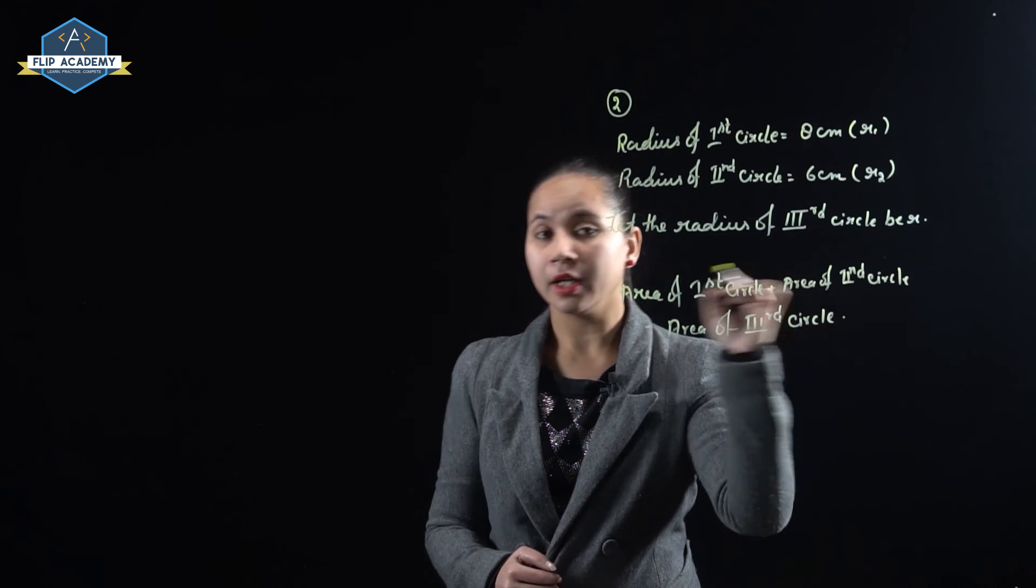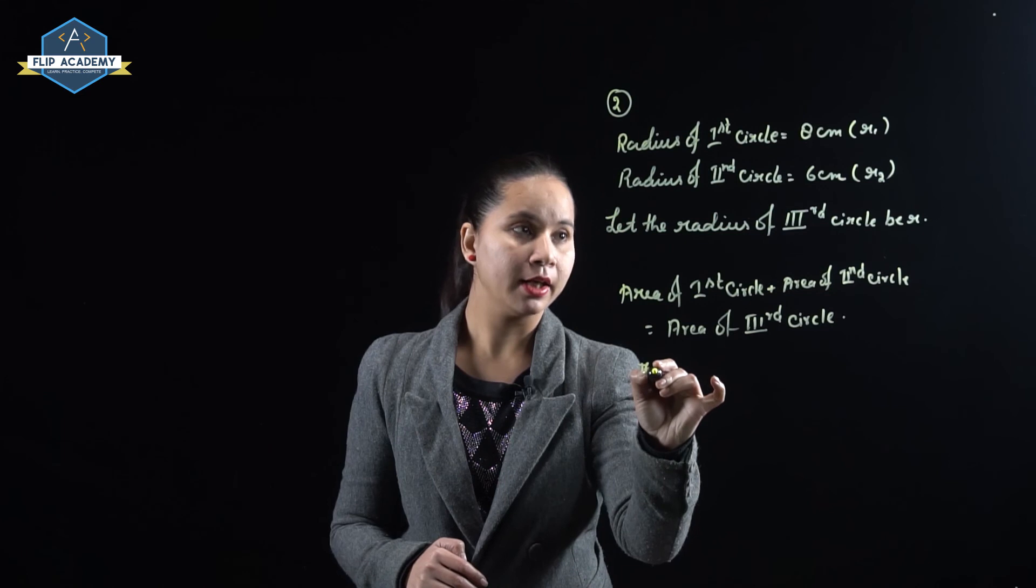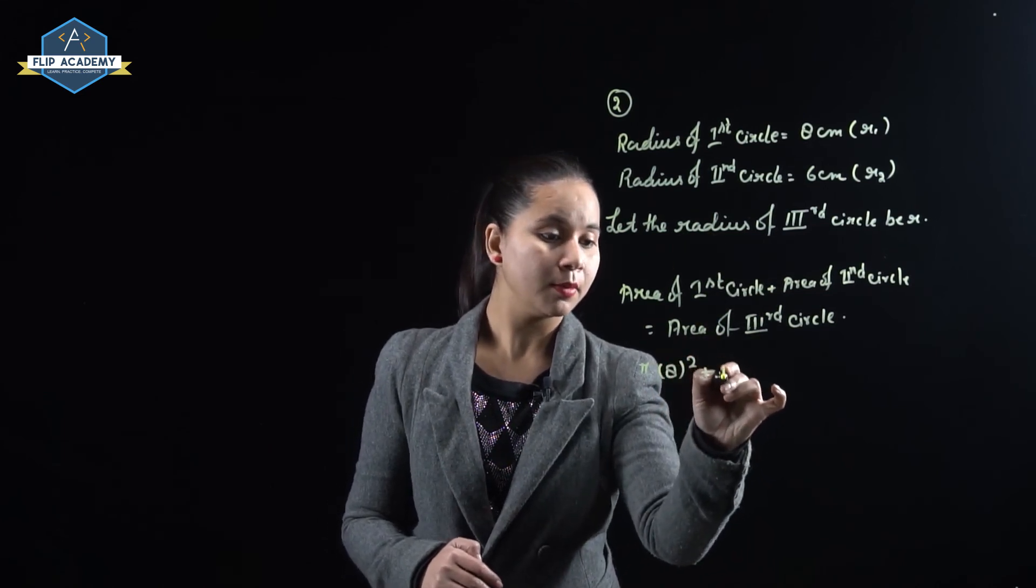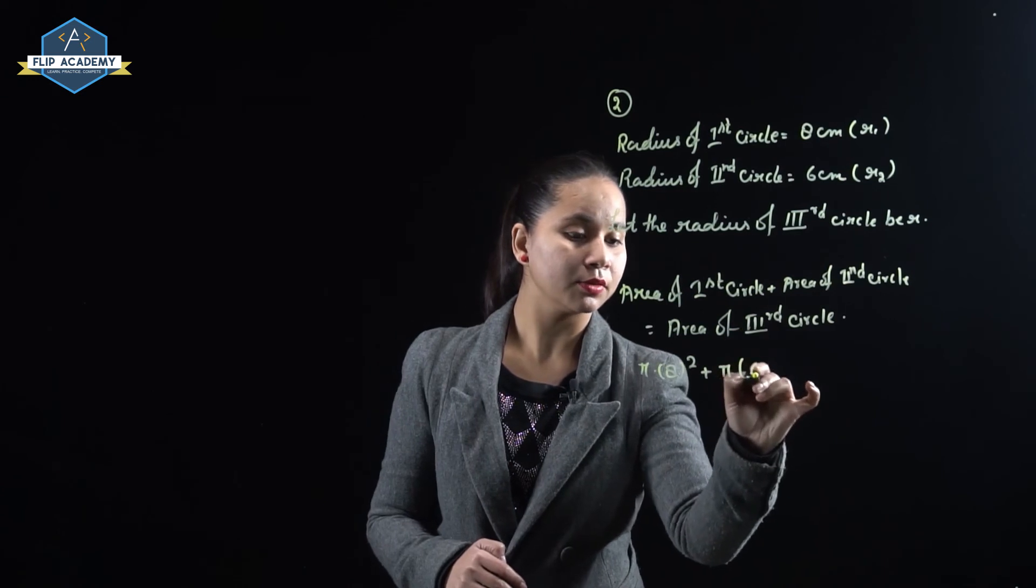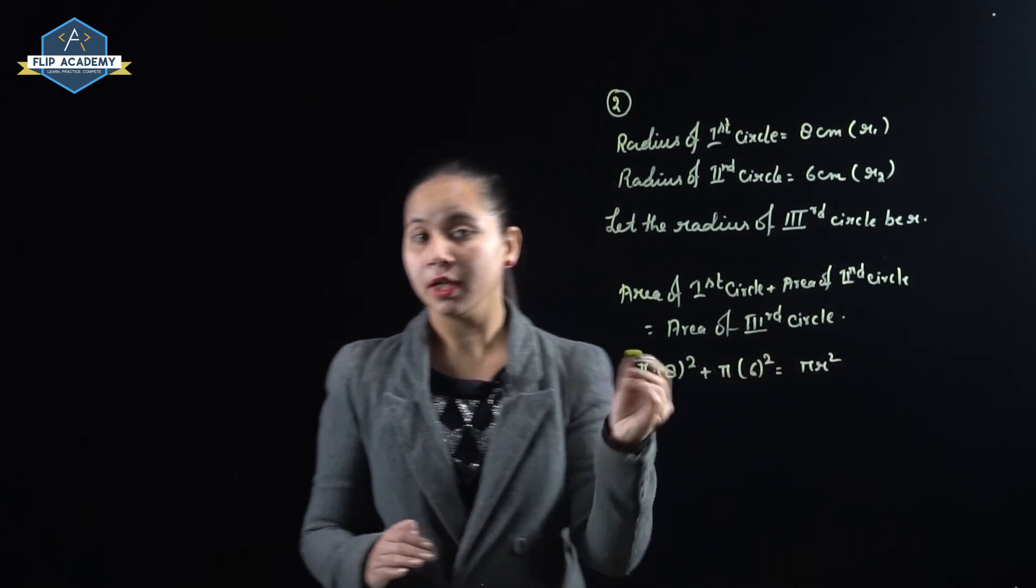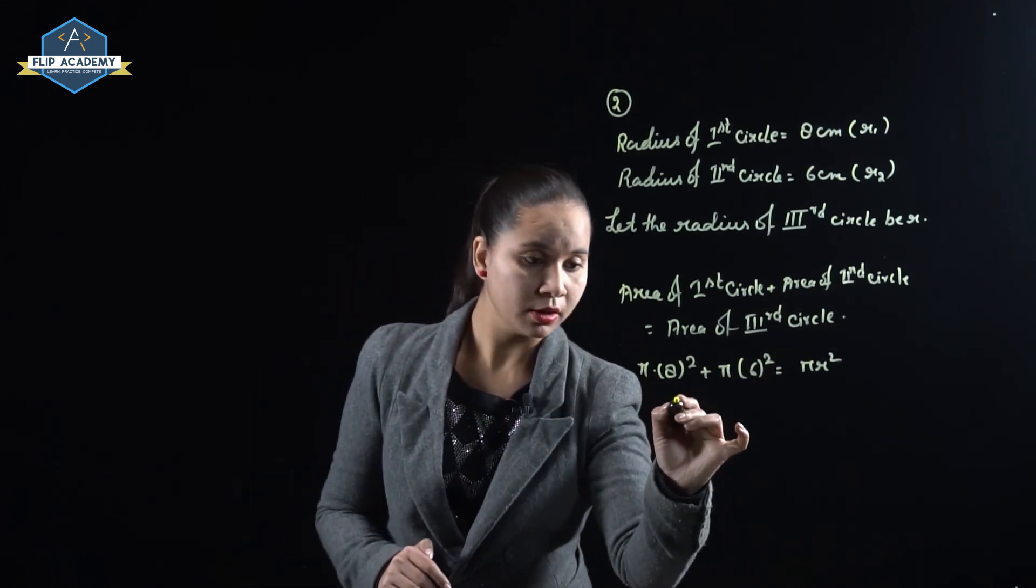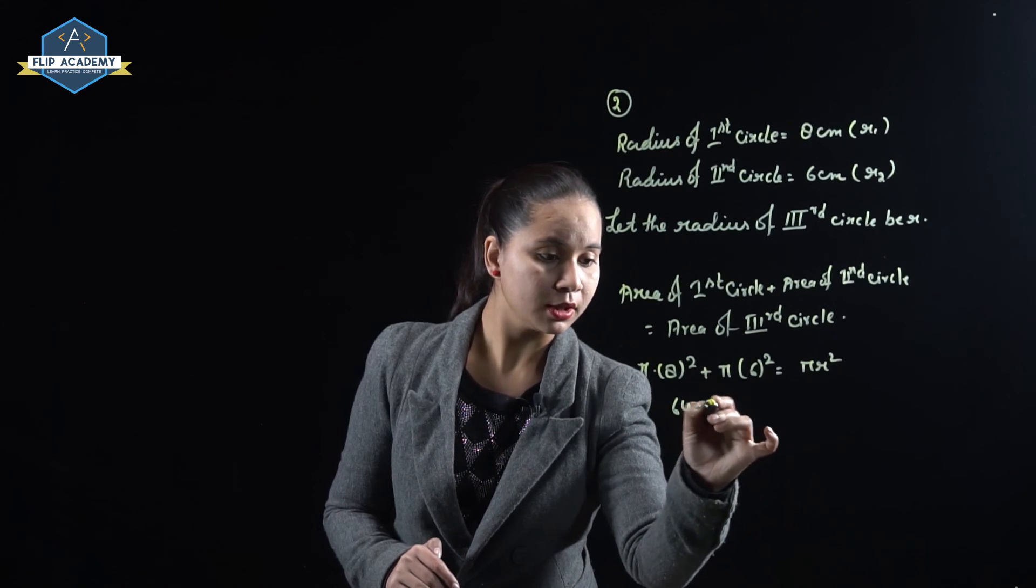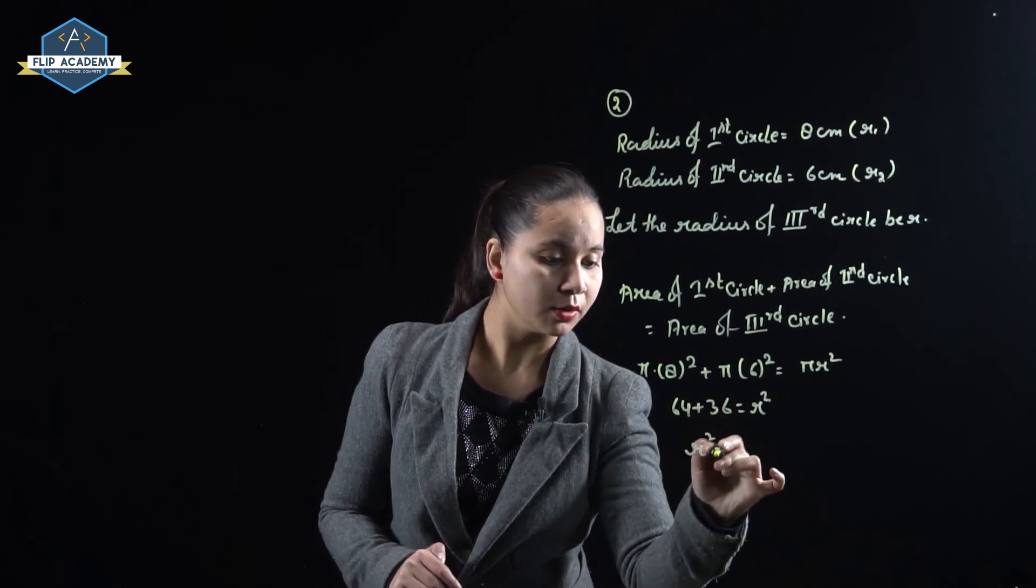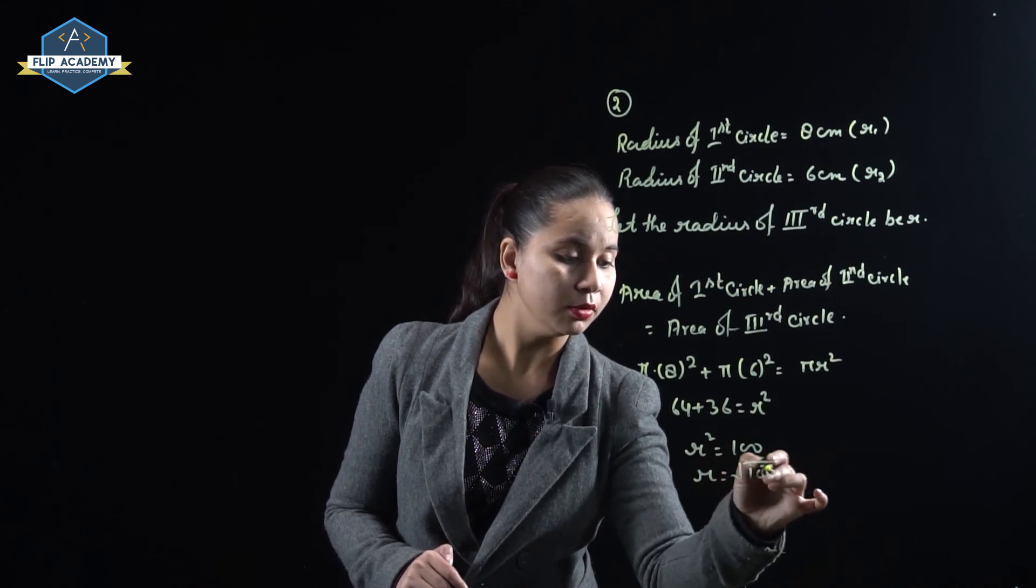Area of first circle is pi r square where r is 8 square, plus pi r2 square which is 6 square, is equal to pi r square for the third circle. Pi is common in each of the terms. So now 64 plus 36 is equal to r square. So r square is equal to 100 and r is equal to square root of 100 is equal to 10 cm.